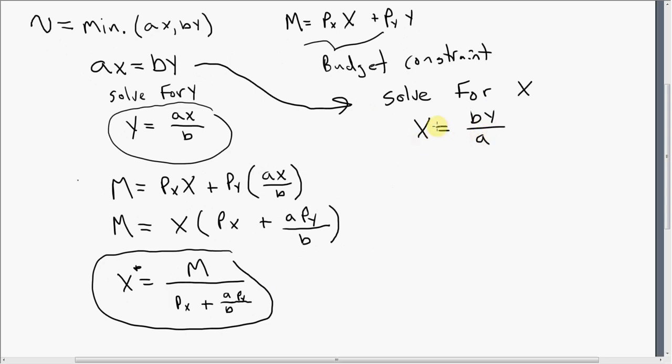And as before, we're going to just substitute this result into the budget constraint. So for x, I'm just going to write b times y divided by a. And then the price of good y times units of good y. The next thing we'll do is we'll factor out y on the right-hand side.